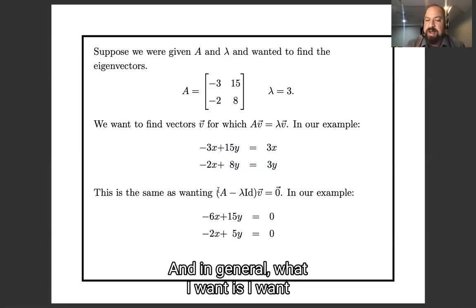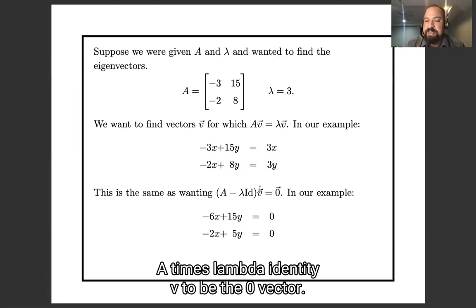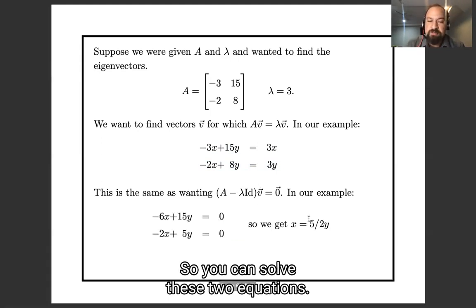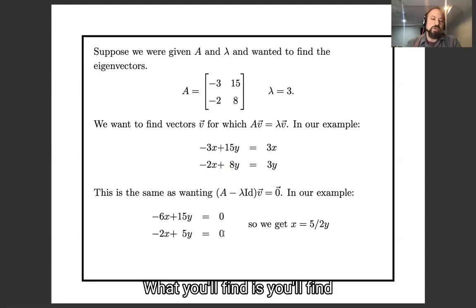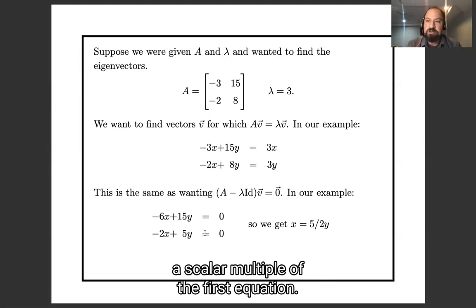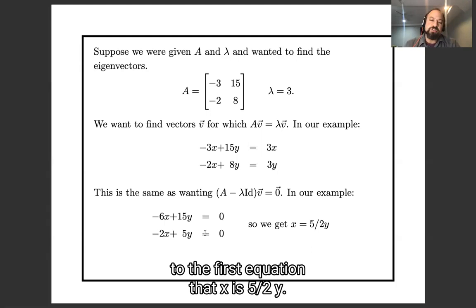And in general, what I want is I want A minus lambda identity times v to be the zero vector. So you can solve these two equations. What you'll find is that the second equation is a scalar multiple of the first equation. So they're redundant. And the solution to the first equation is that x is five halves y.